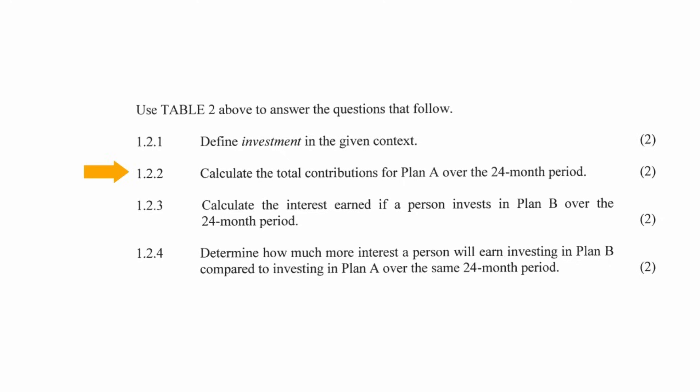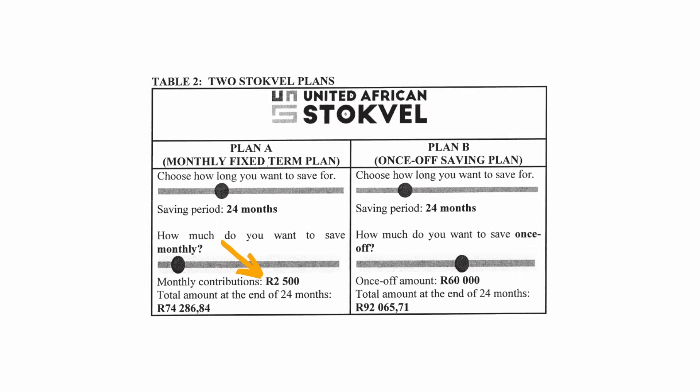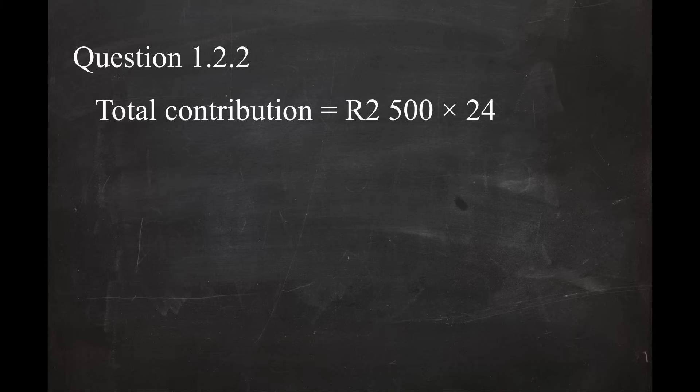In question 1.2.2, you are instructed to calculate the total contribution for Plan A over a 24-month period. From Plan A, the monthly contribution is $2,500 for a period of 24 months. So the total contribution equals $2,500 multiplied by 24 months, and this equals a total contribution of $60,000.